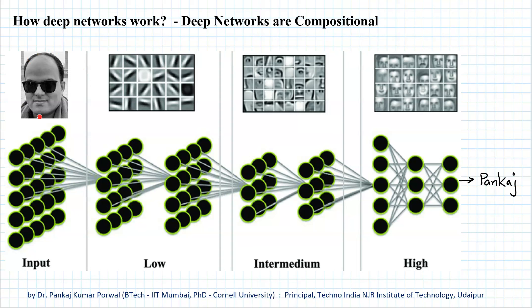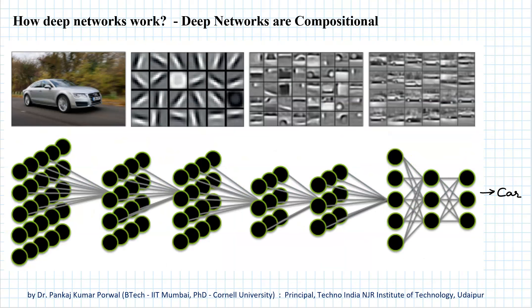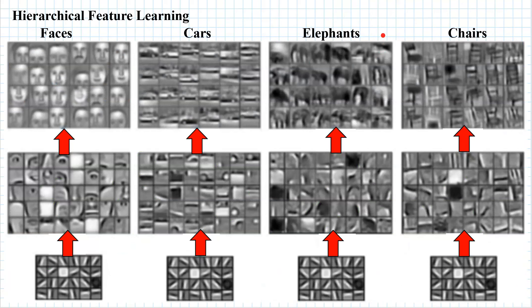It's not just for faces that neural networks can do it. They can do it for cars, elephants, chairs, and anything that you want.